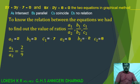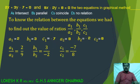When we substitute the values, A1 by A2 is equal to 2 by 9 and B1 by B2 is equal to 3 by minus 2, C1 by C2 is equal to minus 7 by 8.